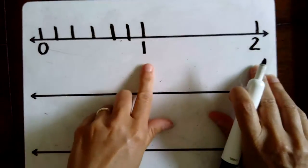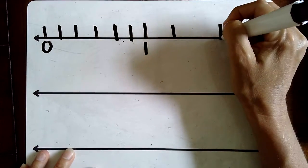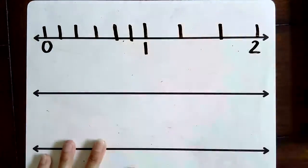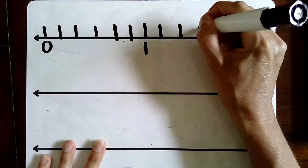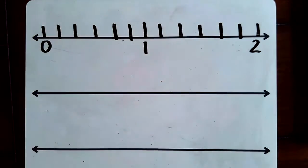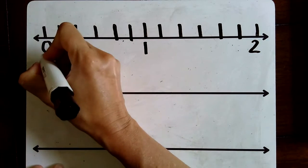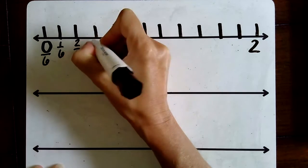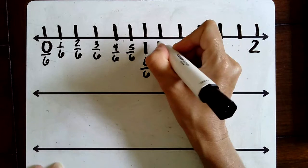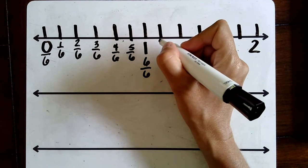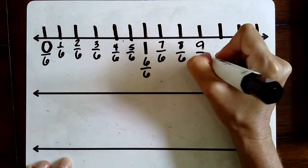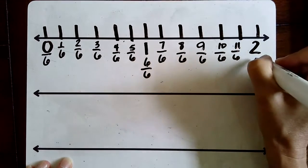Now we're ready to label. Zero sixths, one sixth, two sixths, three sixths, four sixths, five sixths, six sixths — same as one whole. Good, we know we're on the right track. Now our numerator becomes larger than the denominator because we're going past one whole: seven sixths, eight sixths, nine sixths, ten sixths, eleven sixths, and twelve sixths.